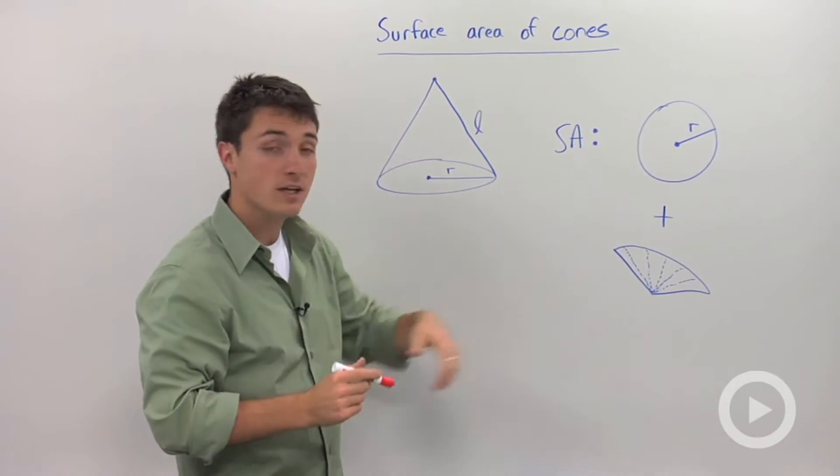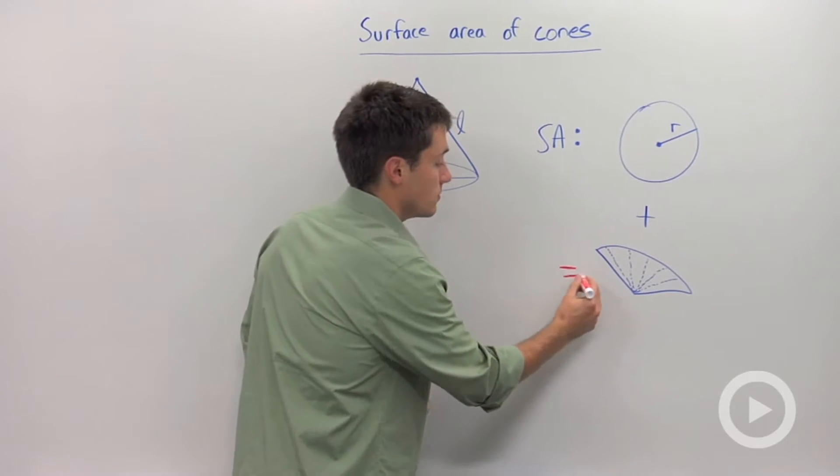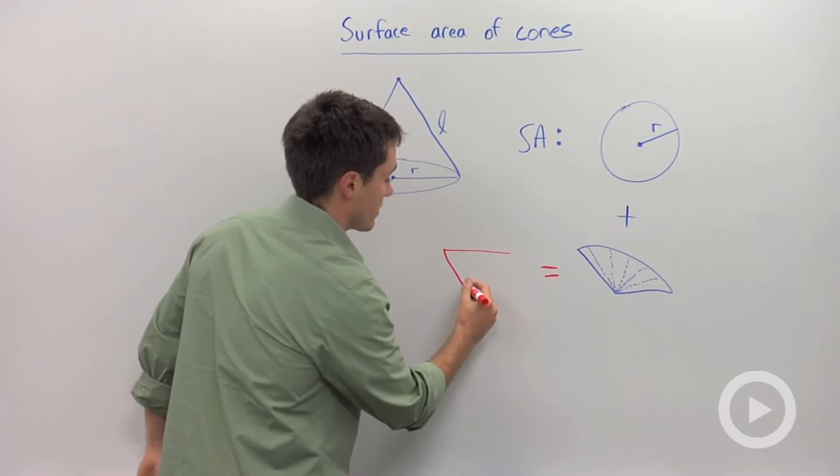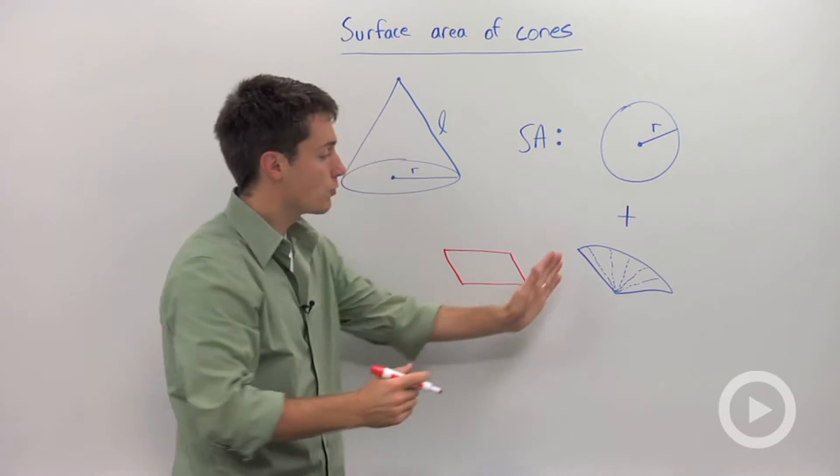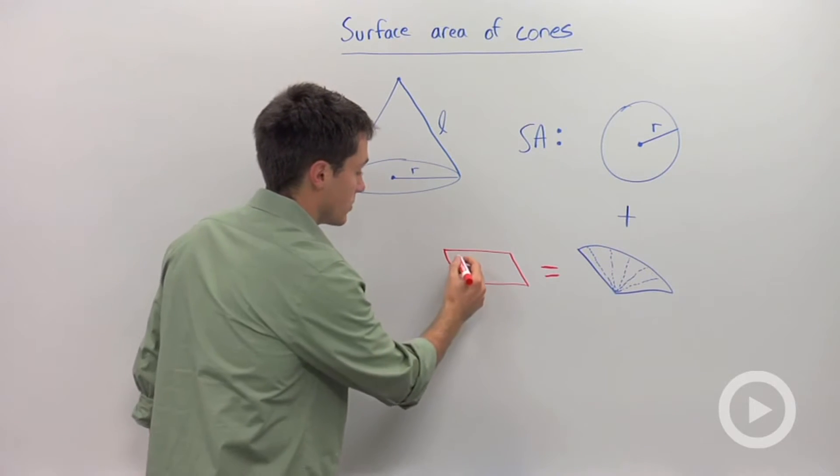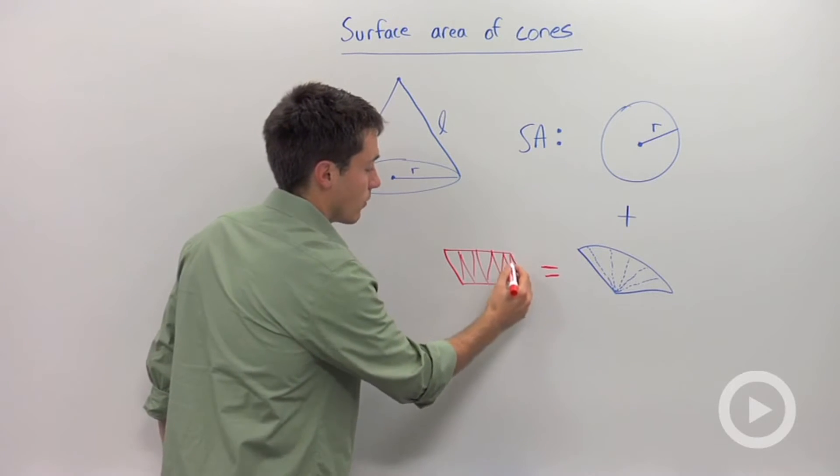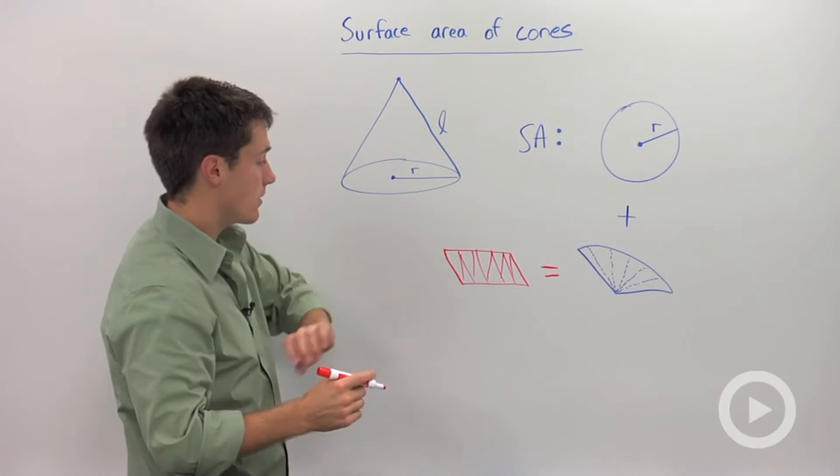Well, what I could do here is I could rearrange this sector into a parallelogram. So again, if I cut this into really tiny pieces, then I would be able to organize it into a parallelogram where I would be able to calculate its area.